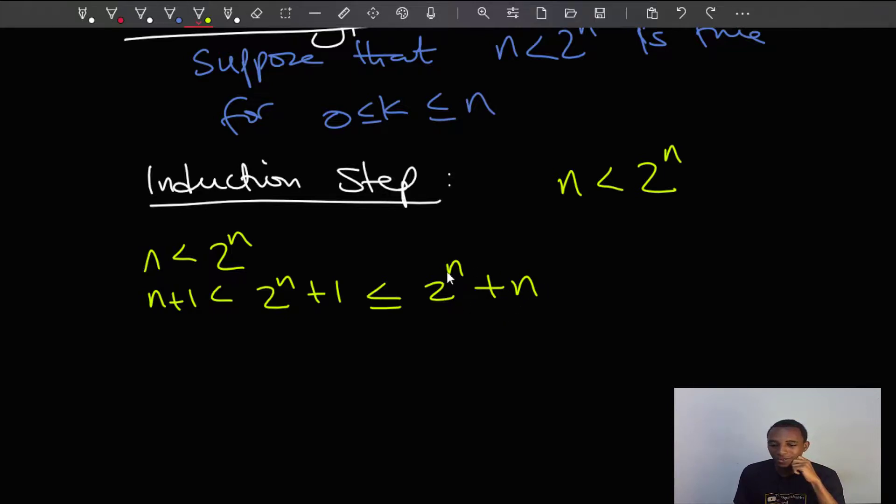And of course, this right here is also less than or equal to 2 to the power n plus 2 to the power n because we know that n from here, n is always less than 2 to the power n. So this right here should be true that if I replace the n with 2 to the power n, this is still less than or equal to that.